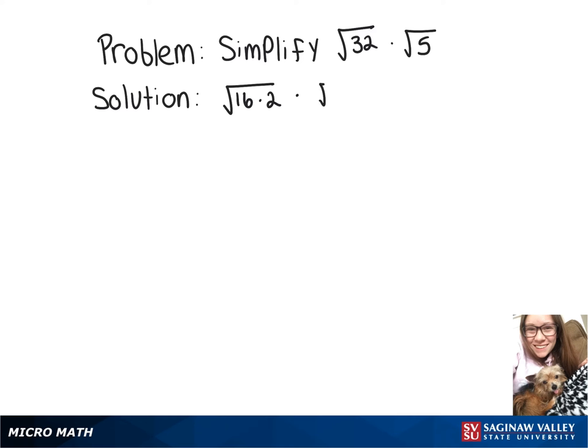And 5 is a prime number, so there are no perfect squares that can go into that, so we'll just leave that be.